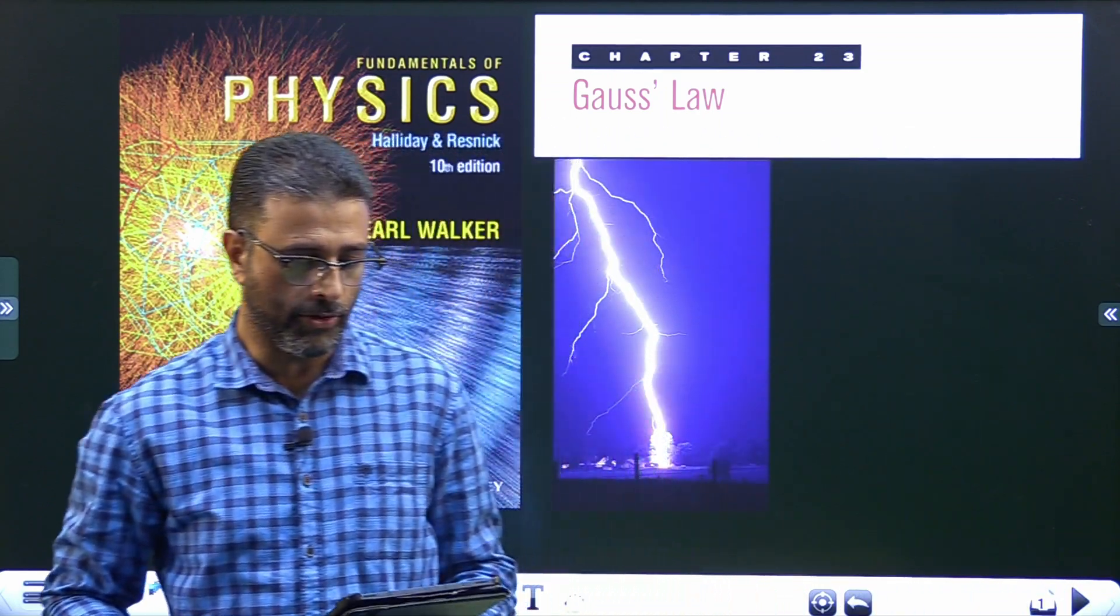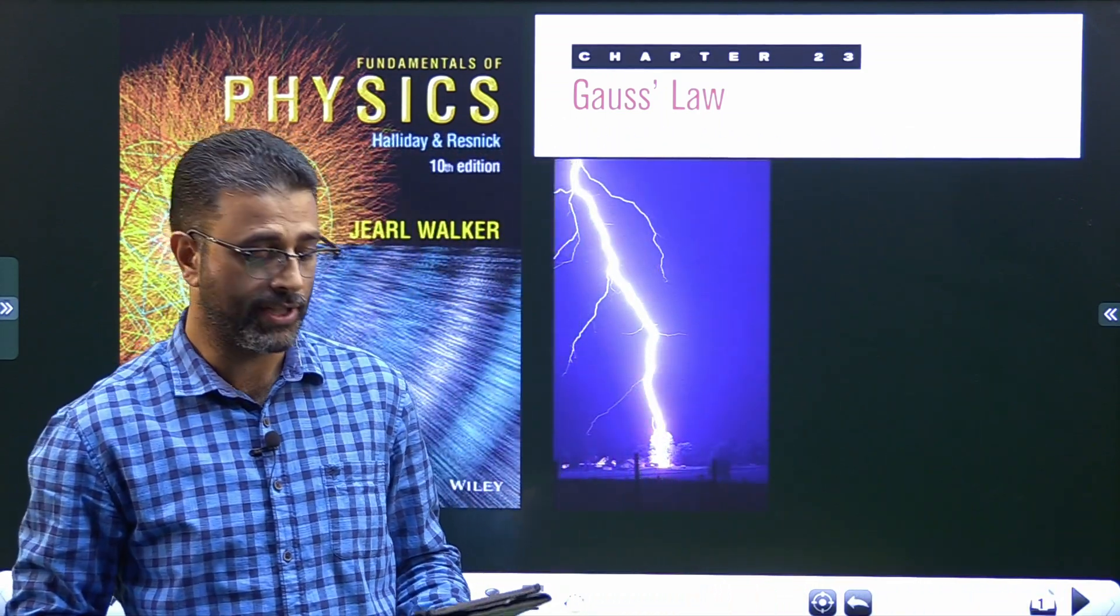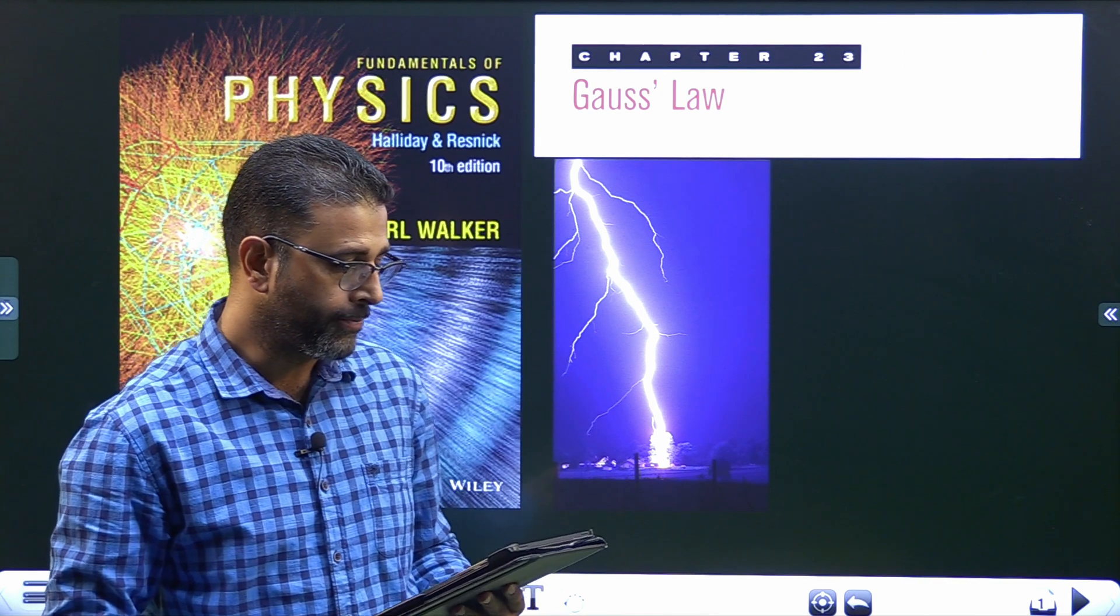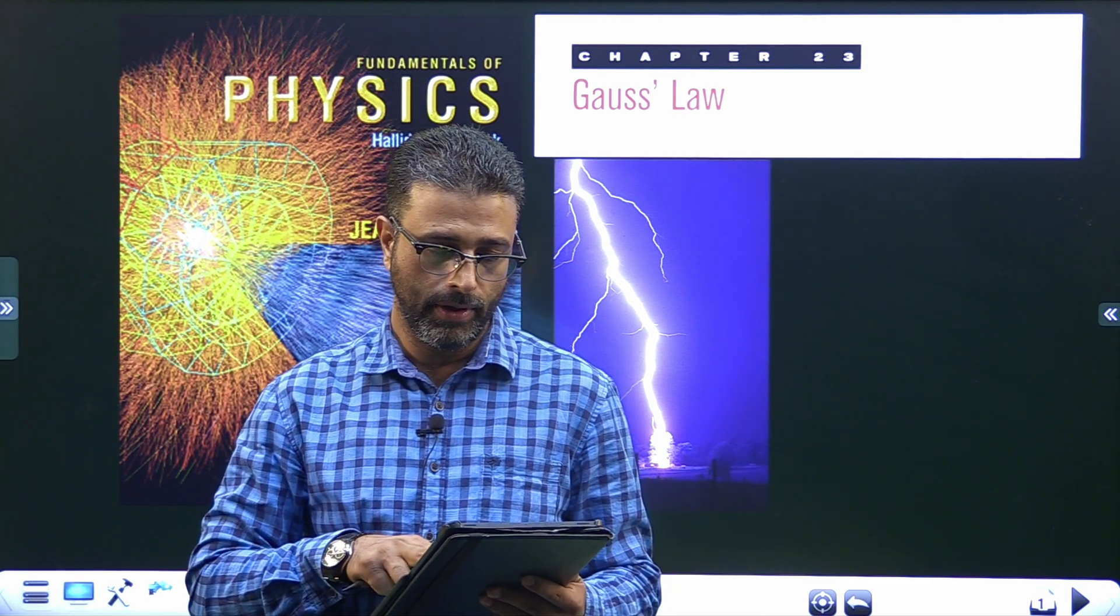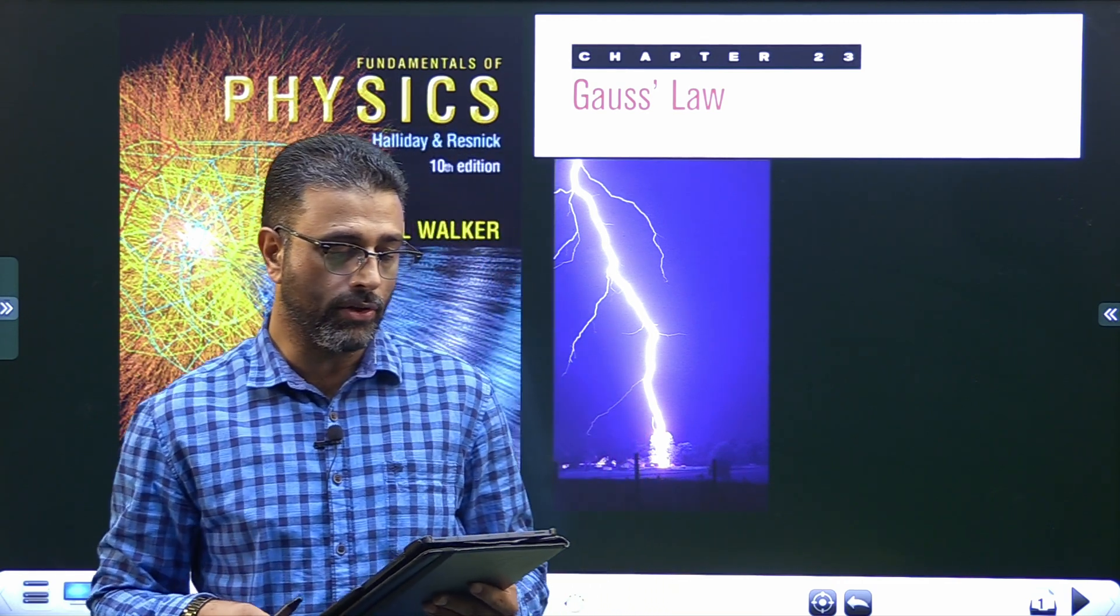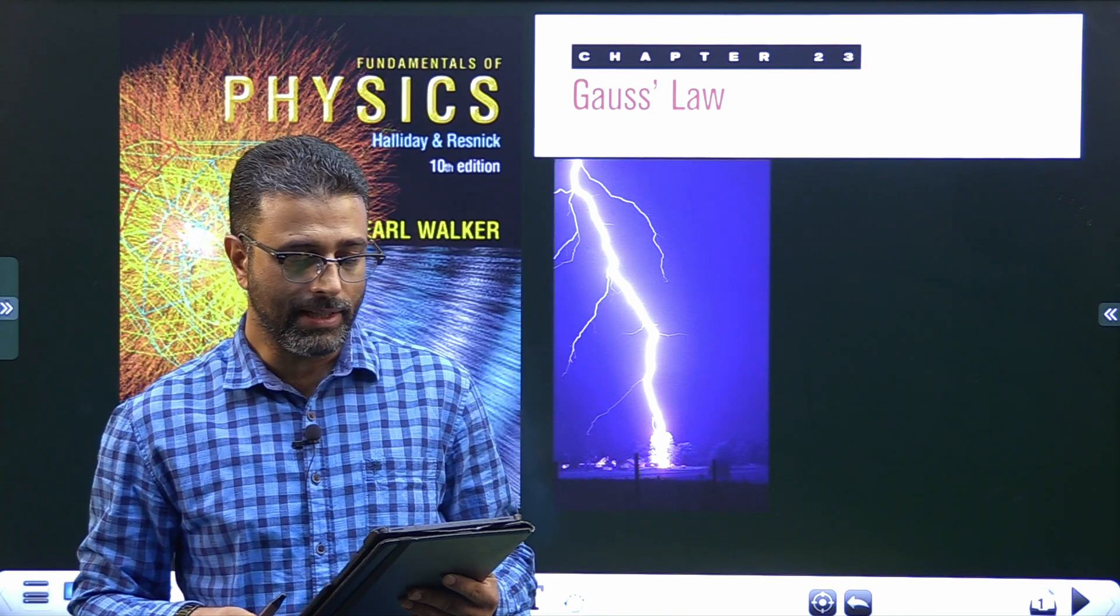Hey guys, Chapter 23 Gauss Law, problem number 7. Let me read out the question: a particle of charge 1.8 micro coulomb is at the center of a Gaussian cube 55 centimeter on edge. What is the net flux through the cube?